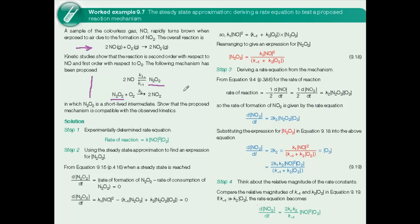To test whether the mechanism is plausible, you need to work out an expression for the overall rate equation that follows from the mechanism and compare it with the one found experimentally. Let's work through the four steps in the strategy. The first step is to use the experimental information to write a rate equation. You're told the reaction is second order with respect to NO, first order with respect to oxygen, and K is the overall rate constant for the reaction.